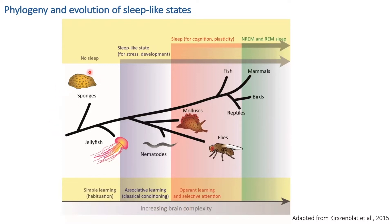Sleep has not been identified in adult sponges — species that don't have neurons — even though those animals display a circadian rhythm. But sleep behaviors have been identified in jellyfish, animals that have neurons but no central nervous system. The more you move up in phylogeny, the more the nervous system increases in complexity, and sleep co-evolves with increased functions and architectural complexity.